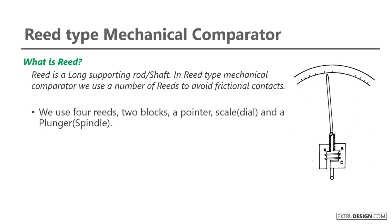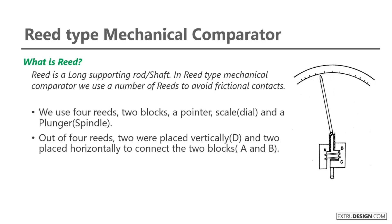We use four reeds, two blocks, a pointer, scale or dial, and a plunger or handle. Out of four reeds, two were placed vertically and two placed horizontally to connect the two blocks A and B as shown in the schematic diagram.